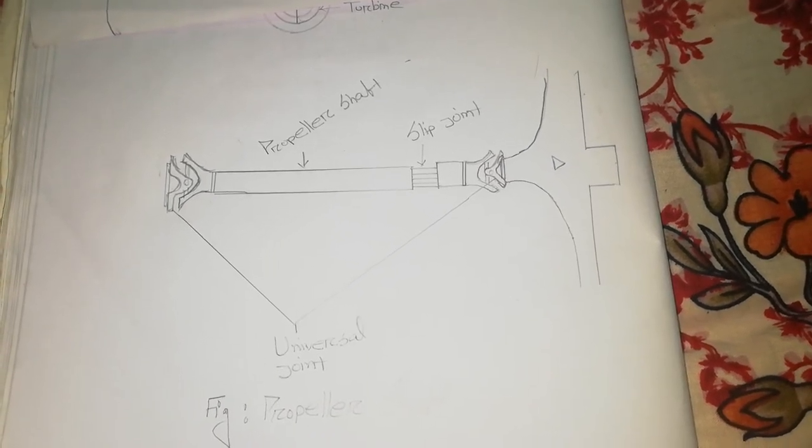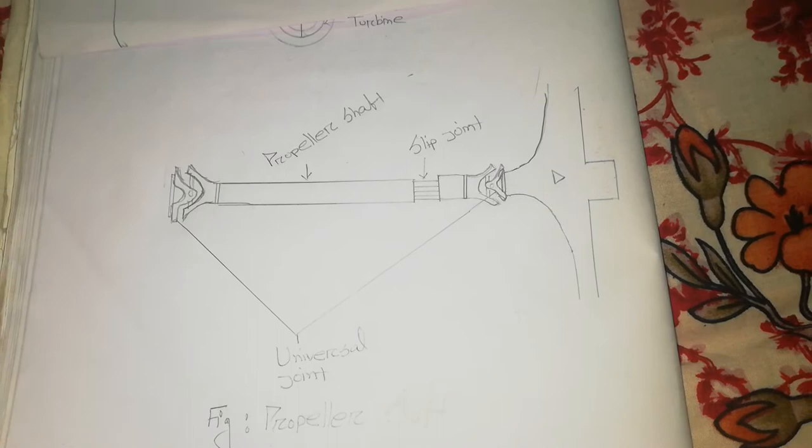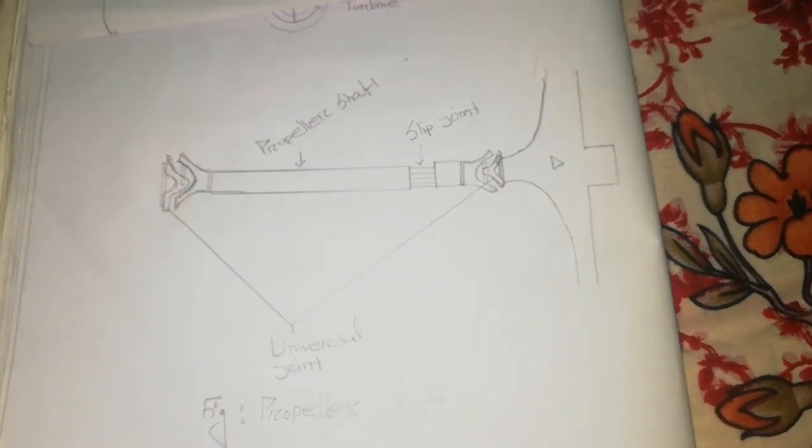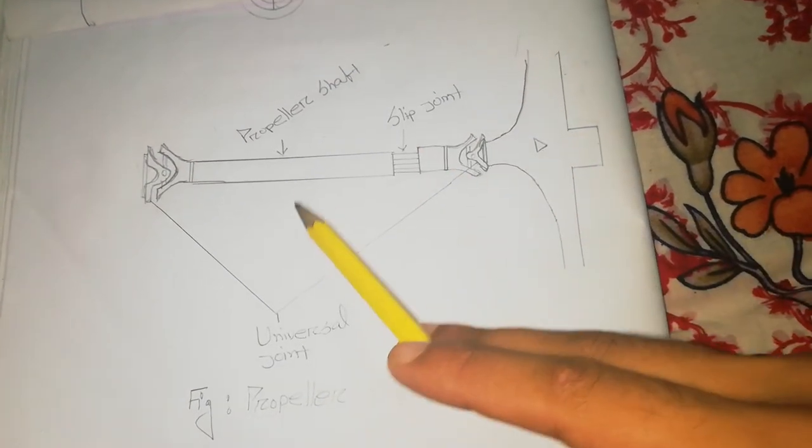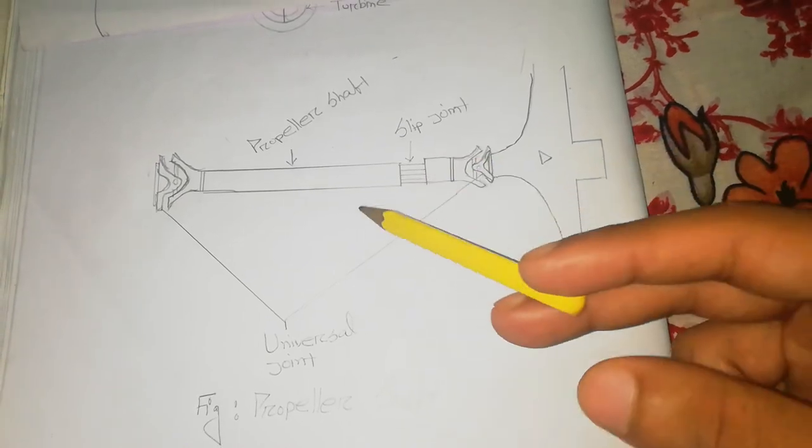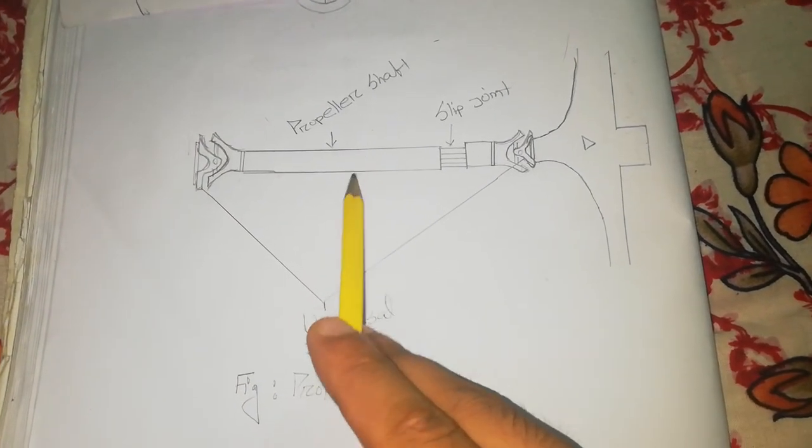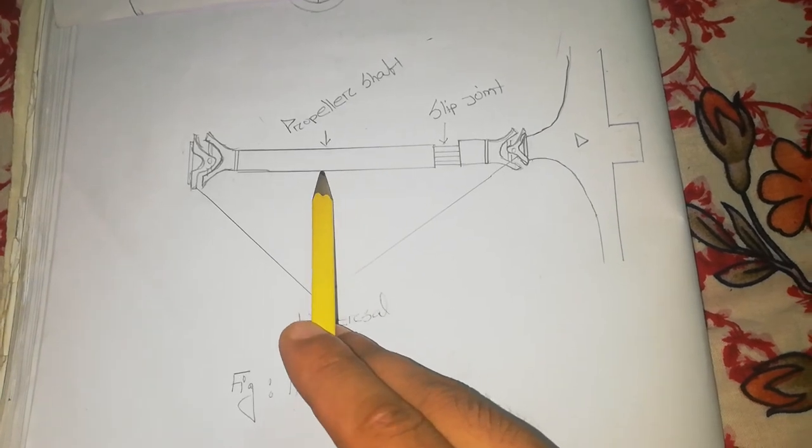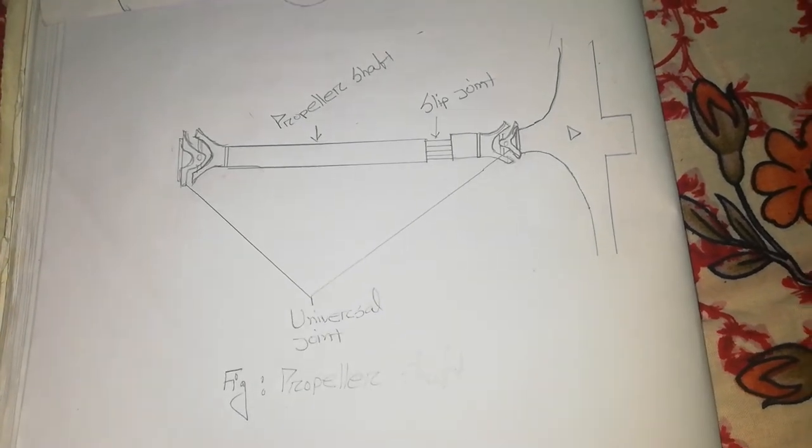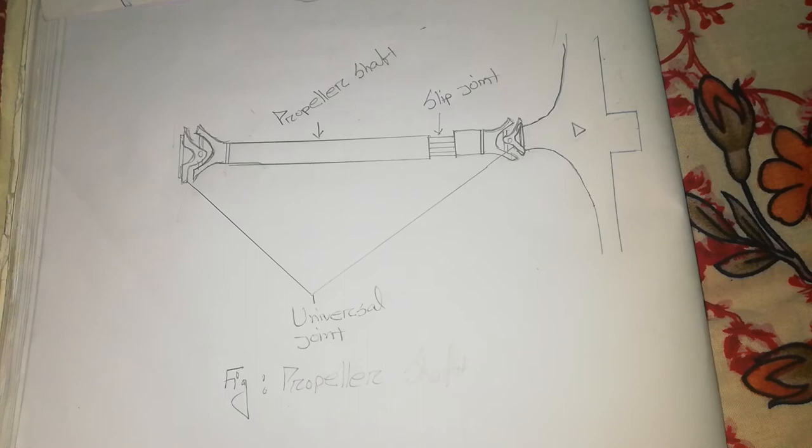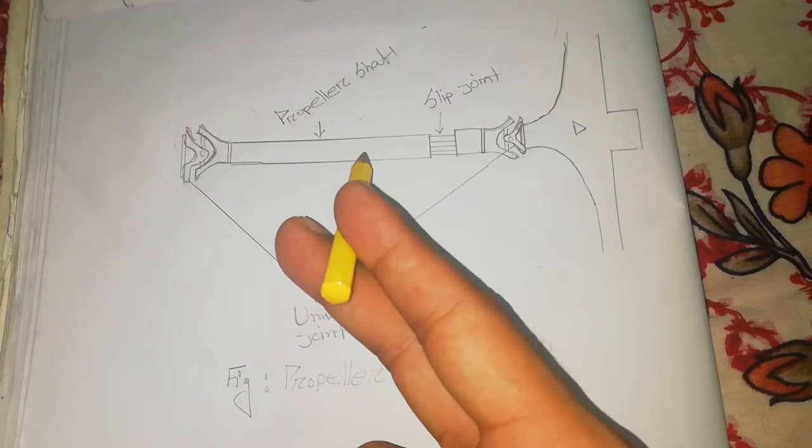This propeller shaft has two parts. First is hollow shaft, second is solid shaft. This figure shows a hollow shaft, which means it's hollow inside. If you have the propeller shaft in front, it is hollow shaft. The rear would have solid shaft.